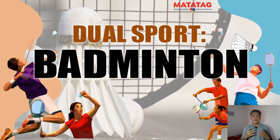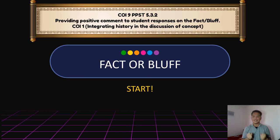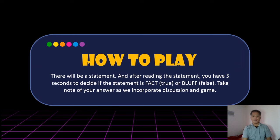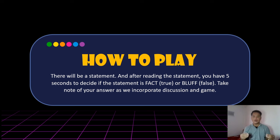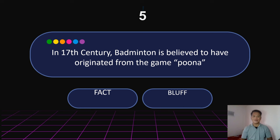As we go over our lesson, let us have an activity entitled 'Fact or Bluff.' There will be a statement, and after reading it, you have five seconds to decide if the statement is fact (true) or bluff (false). Take note of your answers as we incorporate discussion and the game. Item number one: In the 17th century, badminton is believed to have originated from the game Puna. Is it fact or bluff?